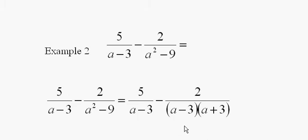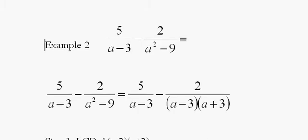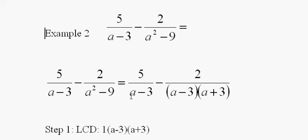And now the first step is to look for the lowest common denominator, and I see that I treat the sum, a minus 3, as one variable, and a plus 3 as another variable.